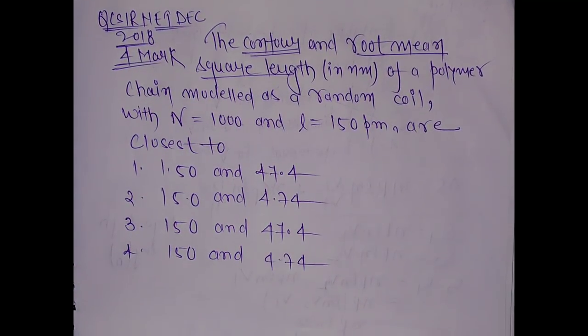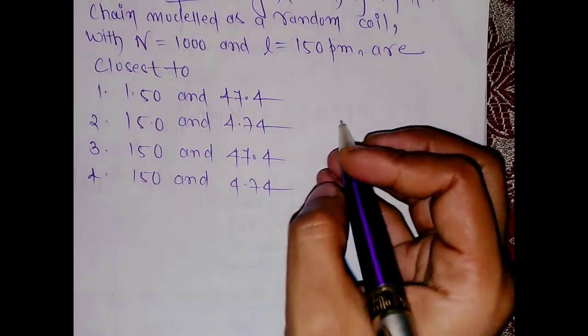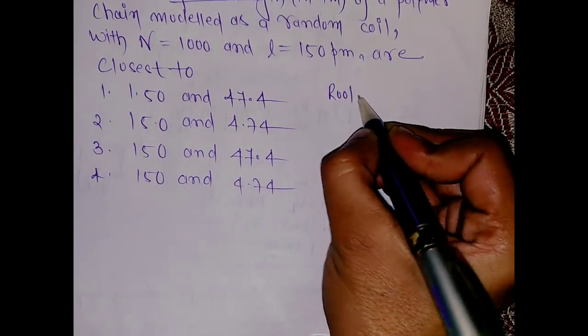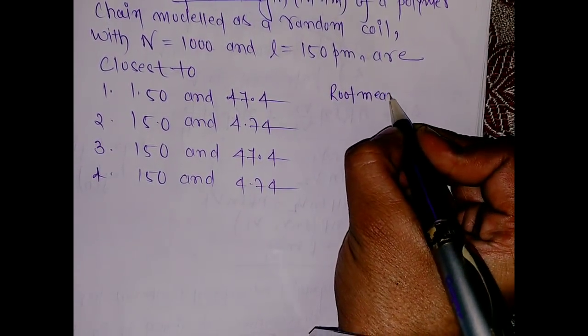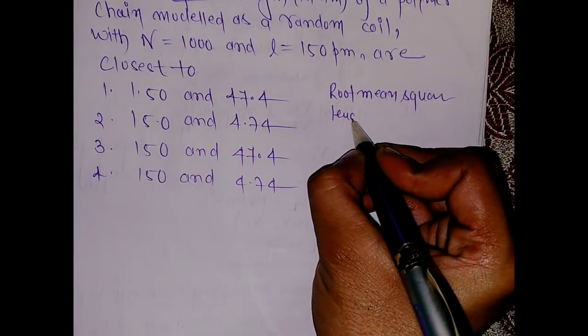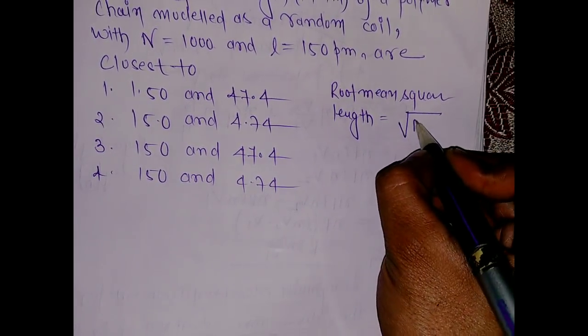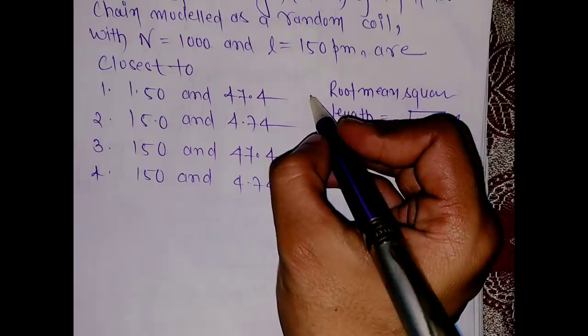So there is a very direct formula, I won't waste much time. Root mean square length is given by the formula: root of N into L. This is the first formula.